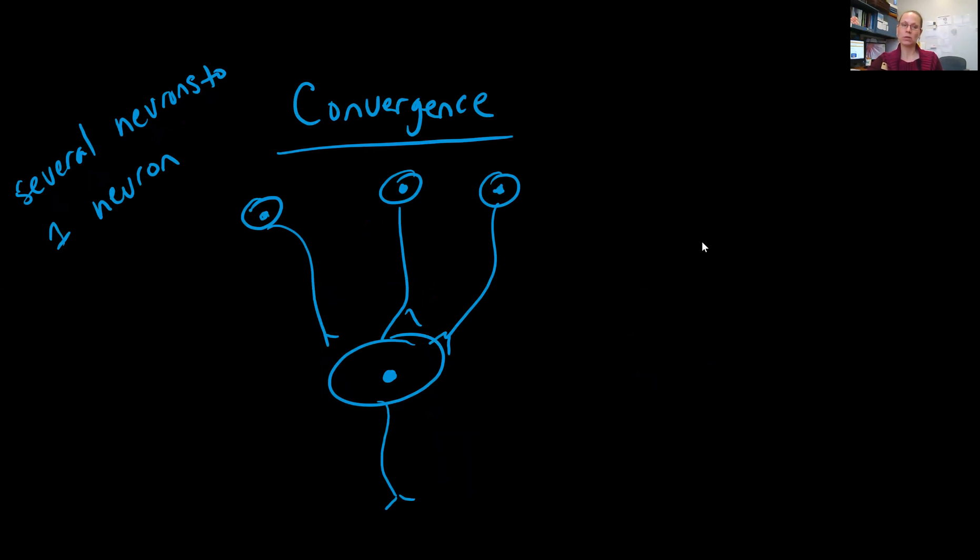Convergence is the opposite—several neurons synapsing onto a single neuron, bringing information together. An example is both conscious and unconscious control of motor neurons. We can have several upper motor neurons synapsing onto the same lower motor neurons, which then go to the skeletal muscle. You might have consciously controlled neurons and unconscious neurons synapsing onto the same one. We'll discuss this more when we get into motor pathways.